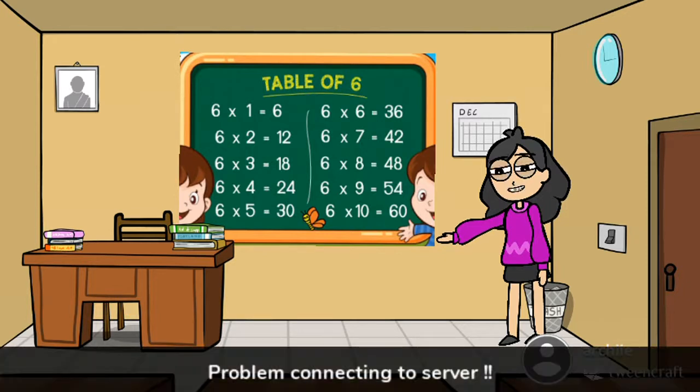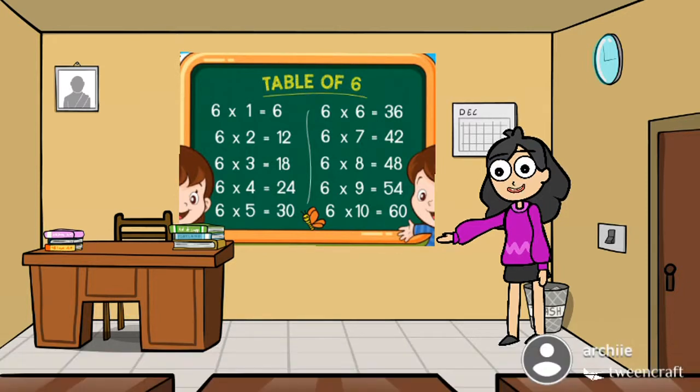6 5s are 30, 6 6s are 36, 6 7s are 42, 6 8s are 48, 6 9s are 54, 6 10s are 60.